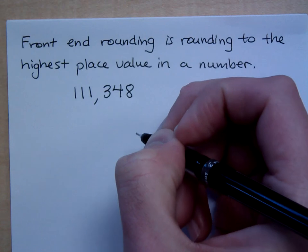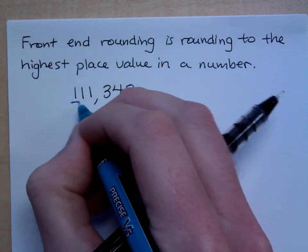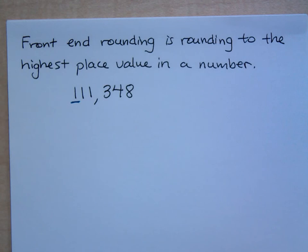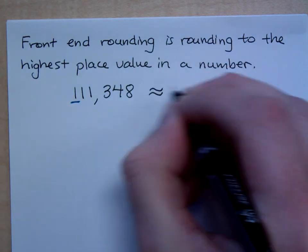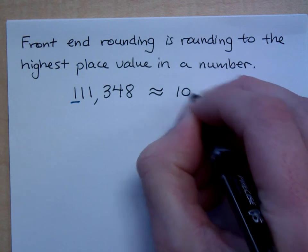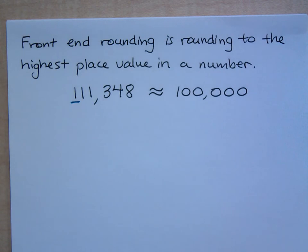Front-end rounding would say look at the highest place value that you have, which is the one, and round to this place. So what place is that first one in? 100,000. 100,000. So if you're rounding to the nearest 100,000, what do you have? So they're saying that would be rounding to the nearest 100,000, so that'd be 100,000.